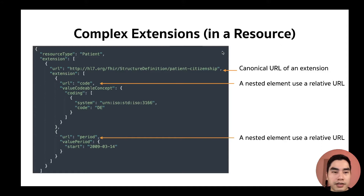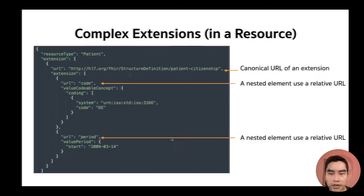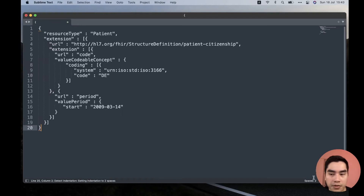When used in a resource, the main canonical URL of the extension is specified, and inside we have sub-extensions. The first sub-extension is CodeableConcept and the second is Period. The URL of the sub-element is relative — for example, just 'code' — meaning it is relative to the parent URL. This is an example copied from the specification page.